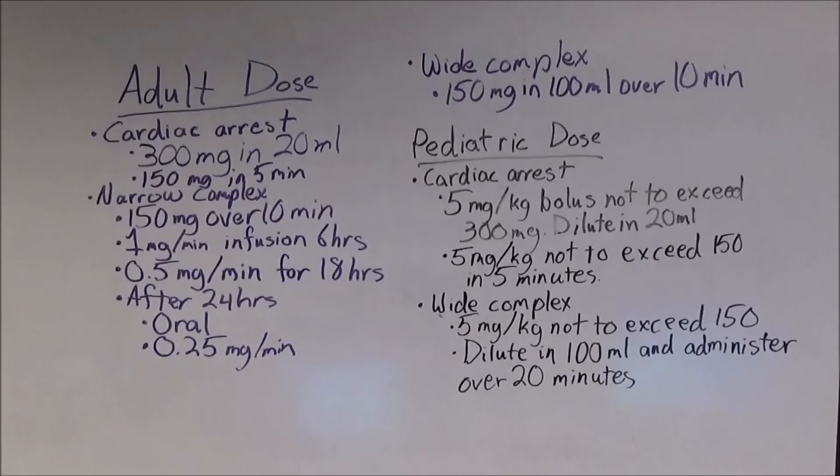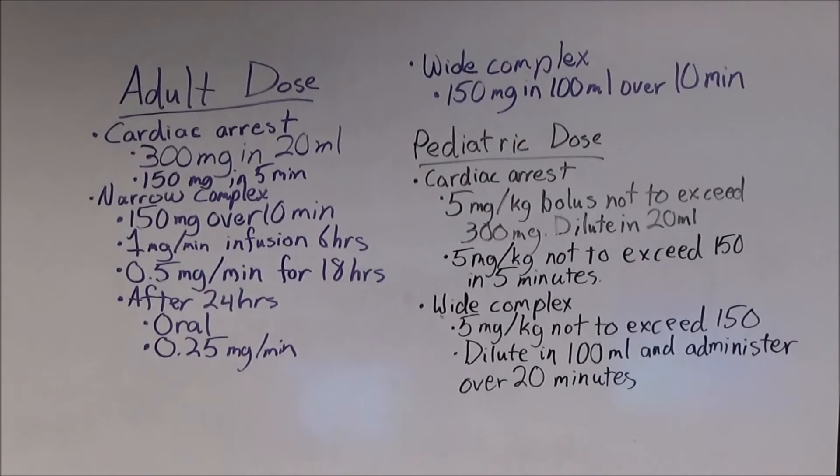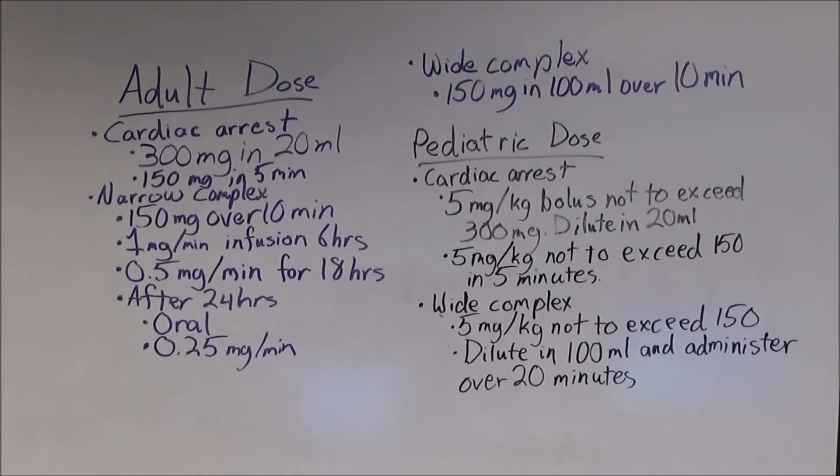As stated before, medication doses can vary greatly by region, so please refer to your own local protocols prior to administration. The adult dose for patients in pulseless VTAC or VFib is 300 mg diluted in 20 mLs of normal saline, administered IV slam. An additional dose of 150 mg may be administered once, five minutes after the initial dose.